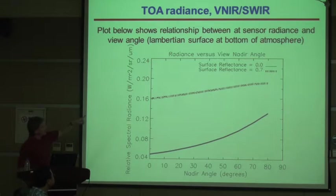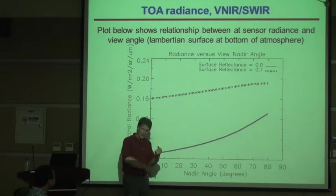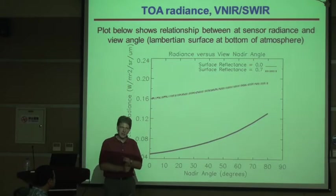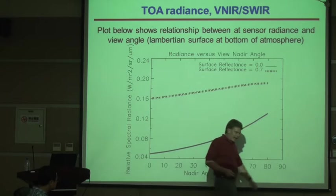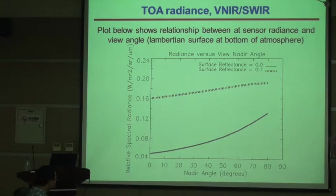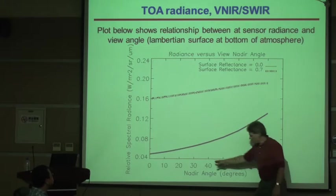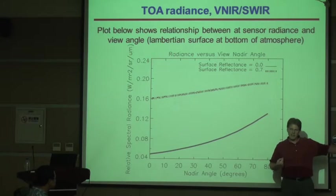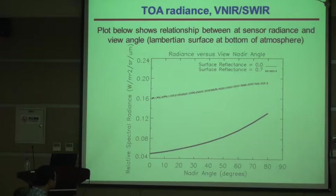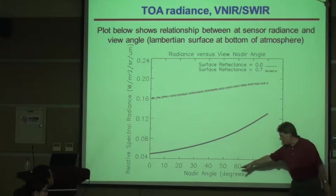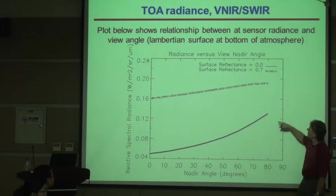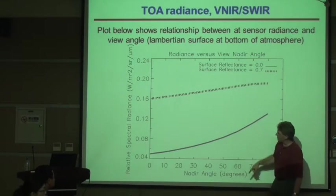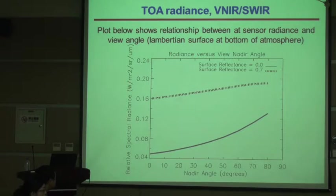Now, view angle. I've shown you reflectance and optical thickness effects. The nadir angle — as you start to look off-axis, you're looking through a larger atmospheric path length. That's the equivalent of having an increase in optical thickness. You also get some interactions with how aerosols and dust scatter directionally, but for the most part, looking at larger nadir angles means more optical thickness, and the top-of-atmosphere radiance changes depending on surface reflectance.